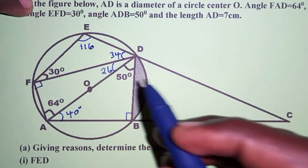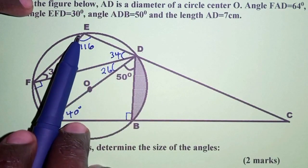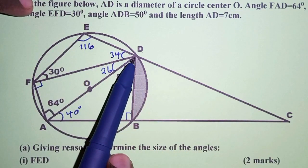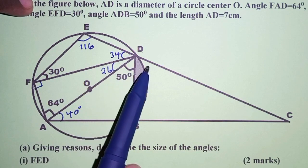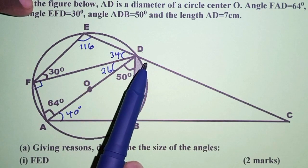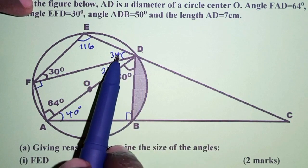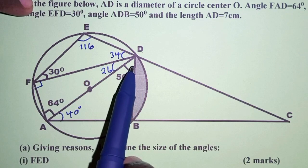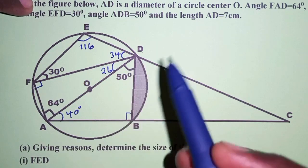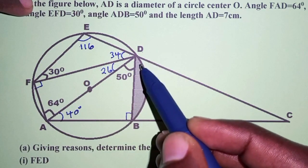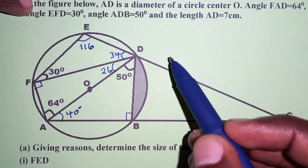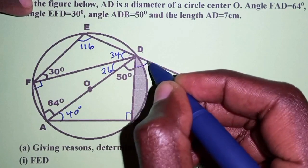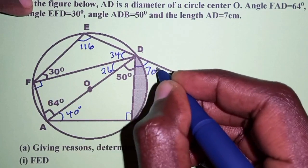Considering EDC, that is a straight line. The angles on a straight line add up to 180 degrees. So we take 34 plus 26 plus 50 plus this angle, equate it to 180, and solve. That gives us 70 degrees.